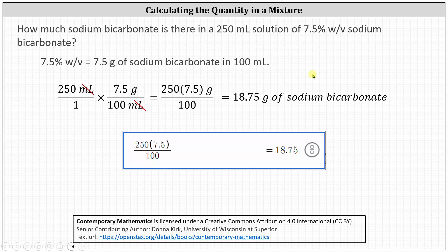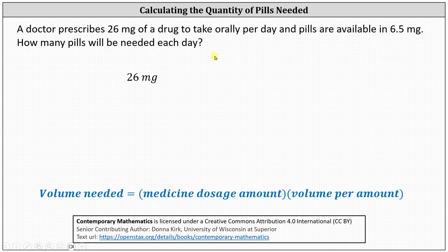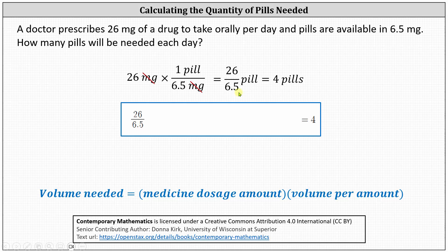Now let's look at an example with pills. A doctor prescribes 26 milligrams of a drug to be taken orally per day, and pills are available in 6.5 milligrams. How many pills will be needed each day? We can use the same formula — instead of volume, we use the number of pills. Because the prescription is 26 milligrams, we begin with 26 milligrams and multiply by the rate of one pill per 6.5 milligrams. Notice milligrams simplify out, leaving us with 26 divided by 6.5 pills, which simplifies to 4 pills.